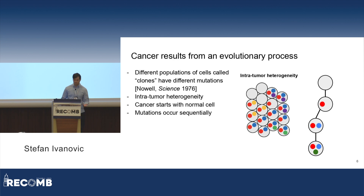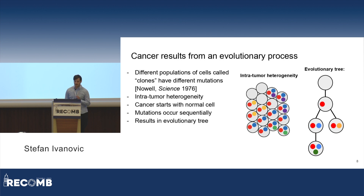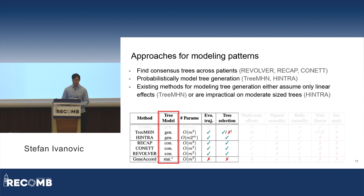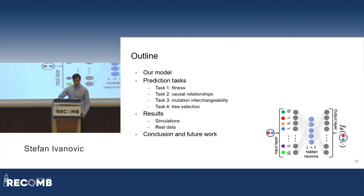There are many approaches for identifying patterns. Some types of approaches find consensus trees across patients — trees that encapsulate information from many different patients — whereas other methods, like our method, probabilistically model tree generation. The existing methods for modeling tree generation either assume only linear effects, such as TreeMHN, or are impractical on moderately sized trees, such as Hintra. In this presentation, I'll first describe our model, then the prediction tasks it can accomplish, the results, and finally conclude.